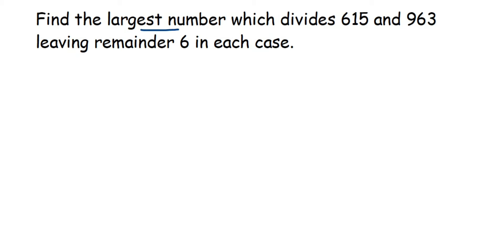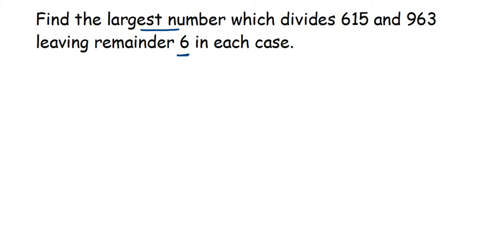Whenever we have to find the largest number dividing two given numbers, we usually find the highest common factor, because the HCF is the highest number that divides two or three given numbers. But since we're given a remainder of 6, there is one extra step: we have to remove that 6 — that is, subtract 6 from 615 and 963 — so that whatever number we get is completely divisible by this largest number.